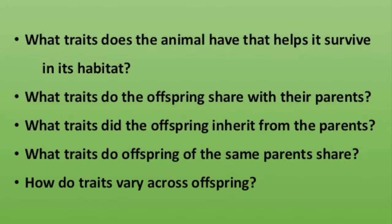For the Extend, students should work in groups as animal detectives. Each group will receive a folder with pictures of animals and their offspring and a short reading. These readings can easily be differentiated. The detectives will use their ability to observe to investigate an animal, and they should keep their animals secret until it is time for the reveal. The teacher asks and posts the following questions: What trait does the animal have that helps it survive in its habitat? What traits do offspring share with their parents? What traits did the offspring inherit from their parents? What traits do offspring of the same parents share? How do traits vary across the offspring? These questions help direct the children to look closely at the photos and compare traits of parent and offspring and their habitat. An example could be that of parent and offspring polar bears — they both have small ears but may have different shaped eyes.